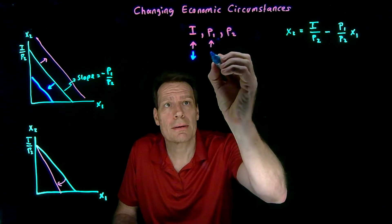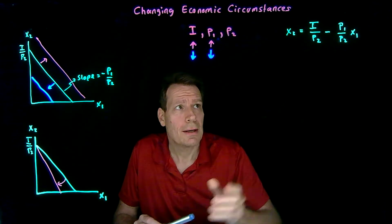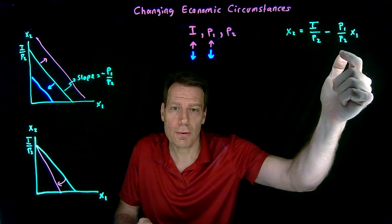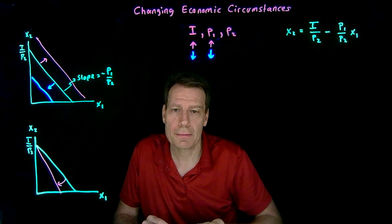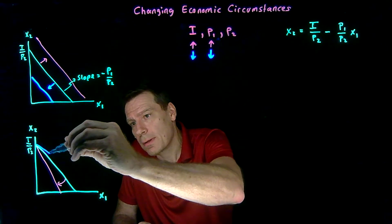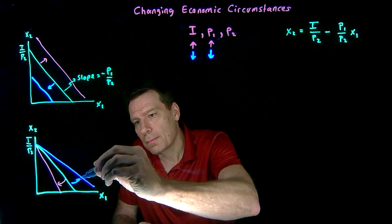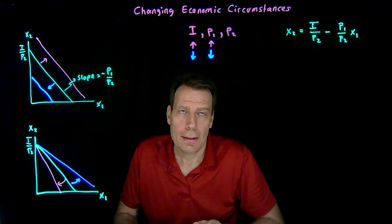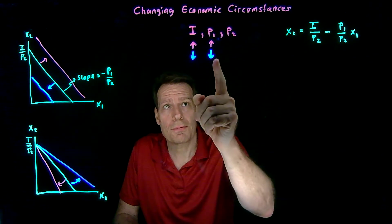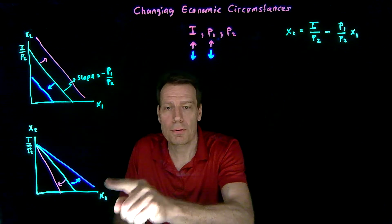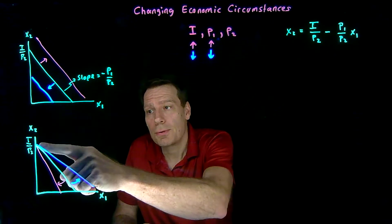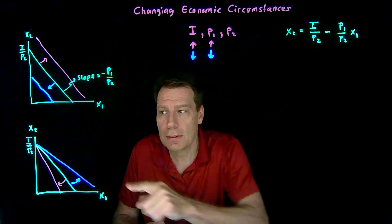A decrease in the price of good 1 would be the opposite. The absolute value of the slope falls, so the slope becomes shallower. But the intercept hasn't changed, so a shallower slope with the same intercept means we rotate out. That should make intuitive sense: if the price of good 1 falls, you can buy more of good 1 if that's all you buy. If all you buy is good 2, nothing has changed for you, so the intercept stays the same.